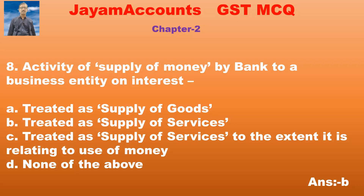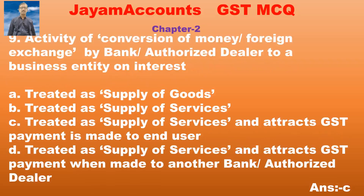Question number 9: Activity of conversion of money or foreign exchange by a bank or authorized dealer to a business entity on interest. Option A: treated as supply of goods. Option B: treated as supply of services.